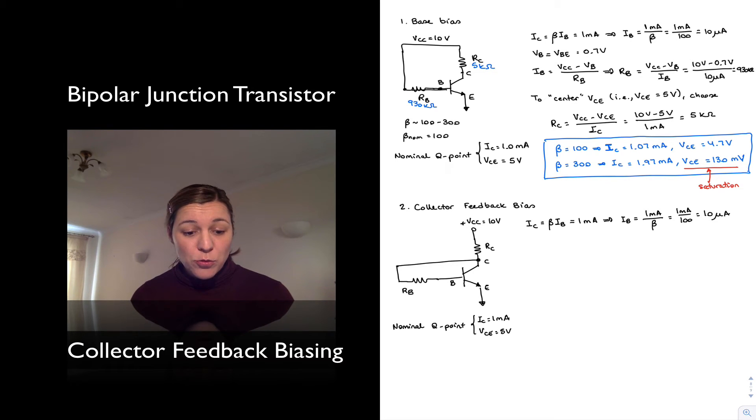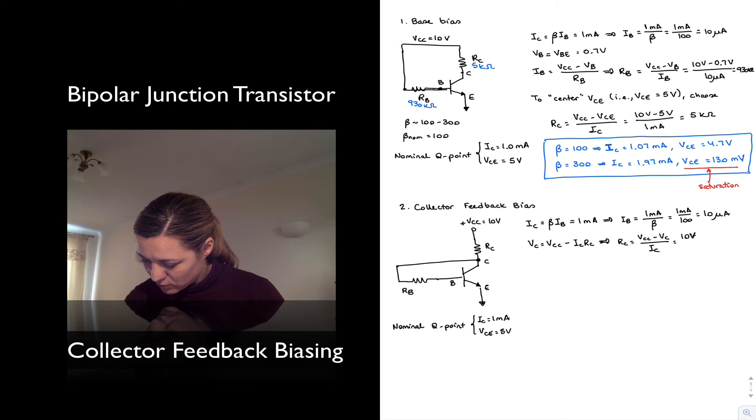And now my VC, I want it to be centered. And VC, which is my collector voltage, is equal to VCC minus the voltage drop across that collector resistor minus ICRC. And so I can calculate my RC as being VCC minus VCE divided by IC. And again, VC in this case is equal to VCE because the emitter terminal is tied to ground. And so I want that voltage to be approximately equal to 5. And so I'll do, this is 10 minus 5, 10 volts minus 5 volts, divided by 1 milliamp, or 5 kilo-ohms.